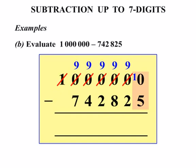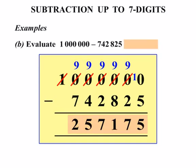So we have 10 minus 5 is 5. 9 minus 2 is 7. 9 minus 8 is 1. 9 minus 2 is 7. 9 minus 4 is 5. And 9 minus 7 is 2. So our answer there. Let's write it out. 257,175. Excellent.